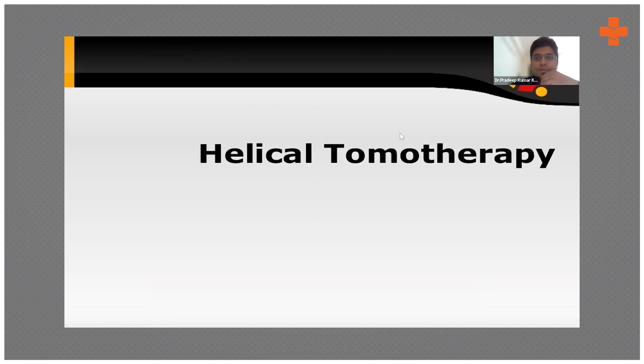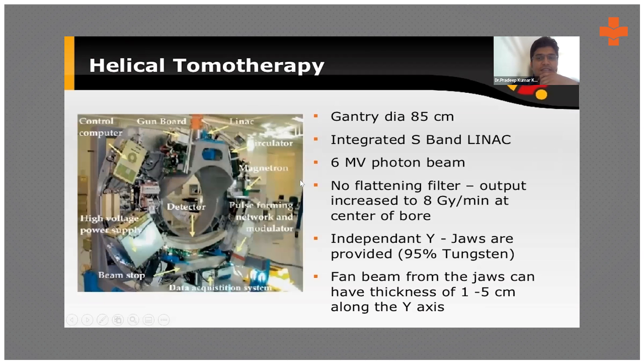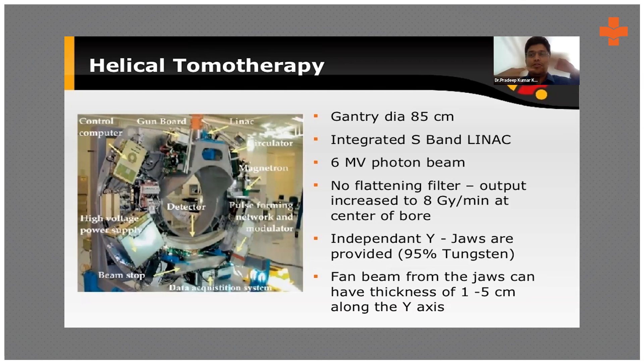One newer technique is helical tomotherapy. As previously mentioned, it is a linac mounted on a CT scanner. As the CT performs a helical motion, the linac also continuously moves in a helical motion and delivers radiation in a helical manner. The specialty of tomotherapy is its binary MLC — there are MLCs throughout 360 degrees that can open and close independently. In normal MLCs they must move continuously, but in binary MLCs there is no need for continuation; they can open or close anywhere.